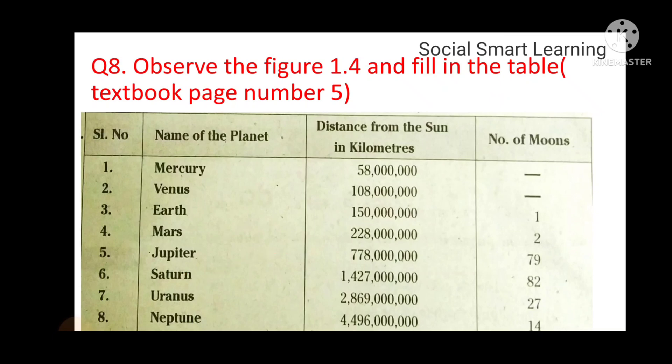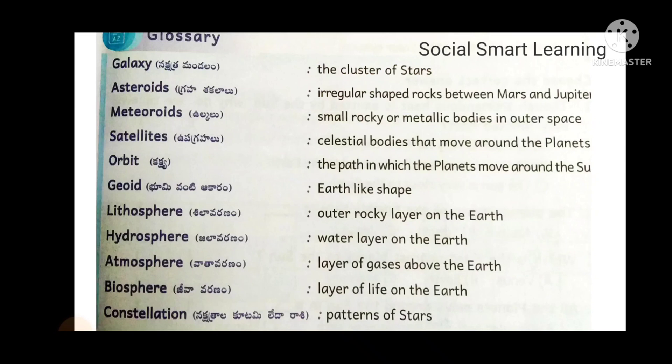Glossary: Galaxy — the cluster of stars. Asteroids — irregular shaped rocks found between Mars and Jupiter. Meteoroids — small rocky or metallic bodies in outer space. Satellites — celestial bodies that move around the planets. Orbit — the path in which the planets move around the sun.